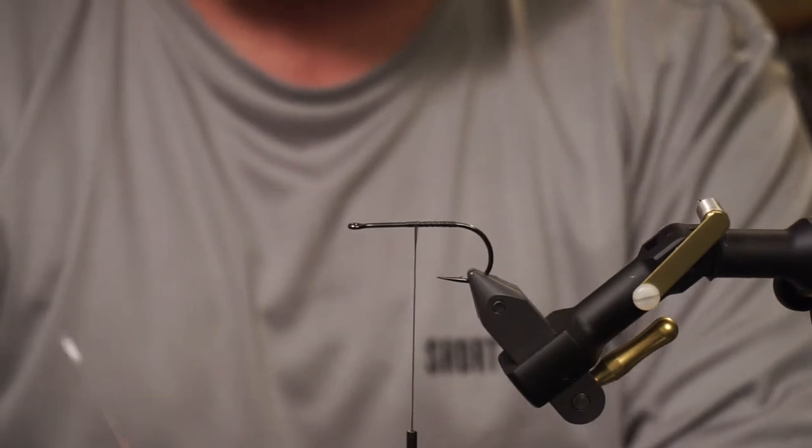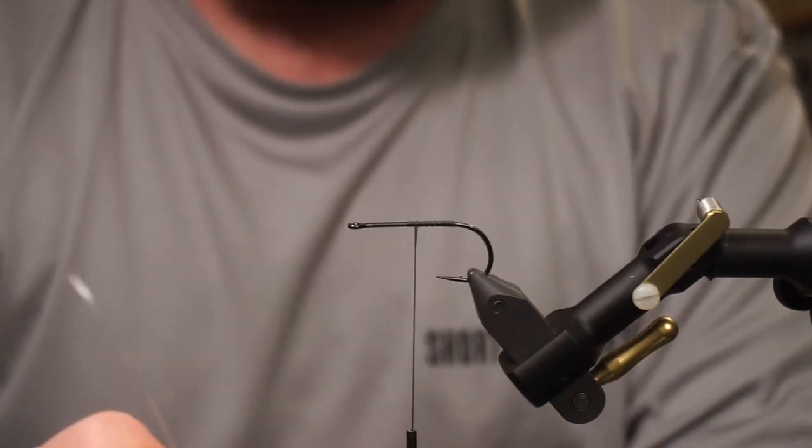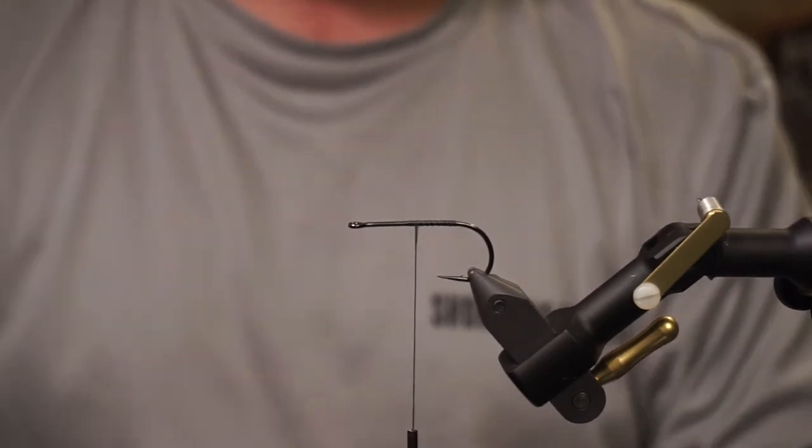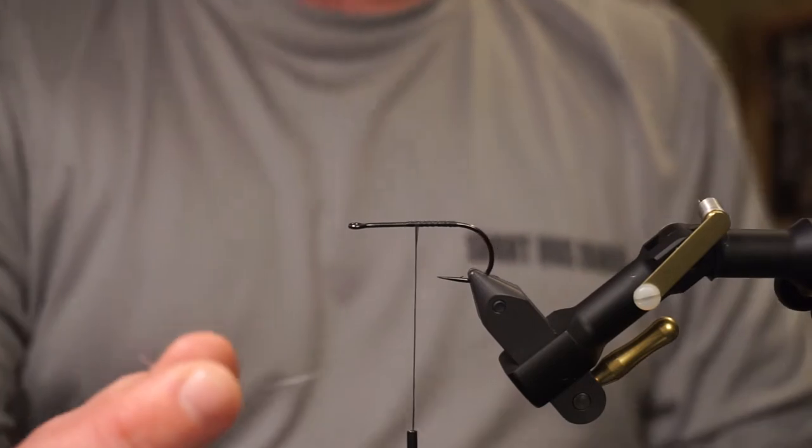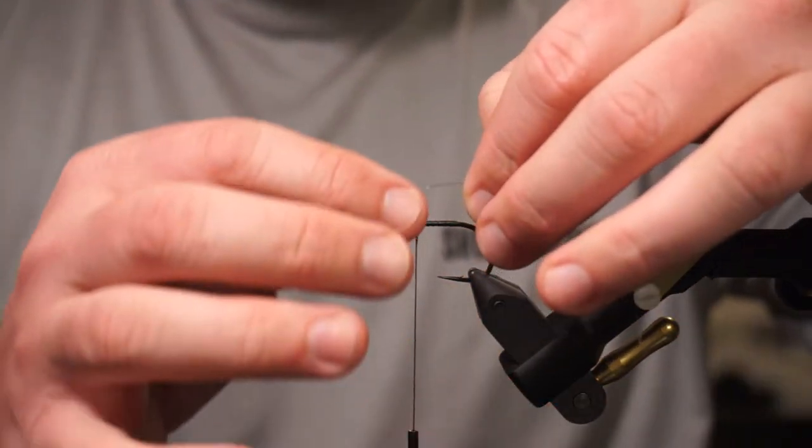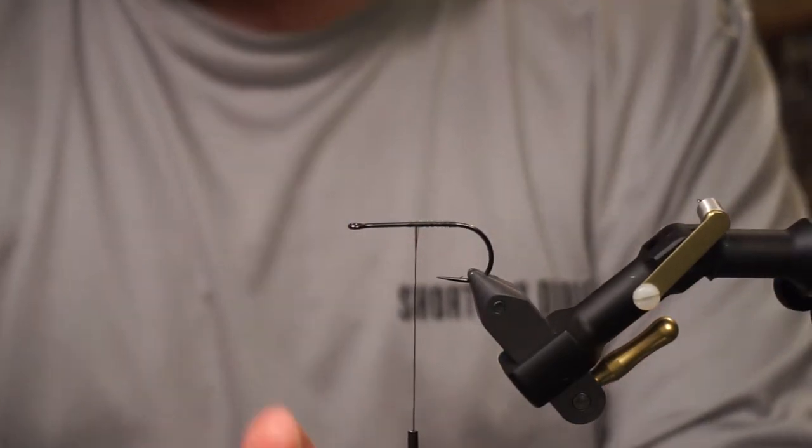First off, we're going to have a piece of monofilament or fluorocarbon, whatever you want to use. Either 20 or 25 pound is going to be the best. I already have a little piece trimmed off here, and we're going to tie this in facing rearwards.